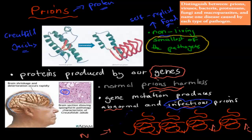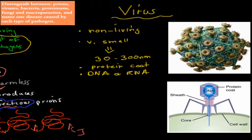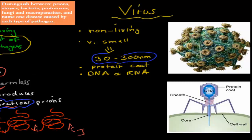The next one we're going to cover is a virus. The virus is also non-living, just like prions — they have that in common. They are non-living because they don't actually replicate themselves; they need to invade a cell to be able to replicate. Now they're very small — bigger than prions but still quite small, about 30 to 300 nanometers. They also have a protein coat, which is like an armor.